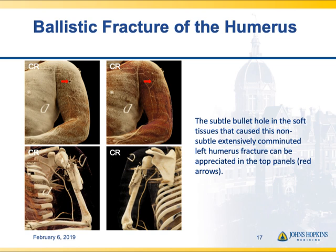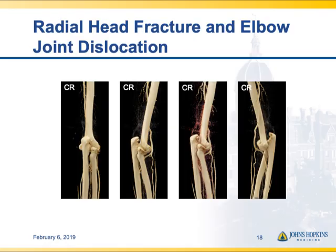This patient doesn't look like much on the top panels — a fairly small soft tissue injury — however this was a bullet wound, resulting in a very comminuted ballistic fracture of the proximal humerus. Most striking is that even with significant metal artifact from bullet fragments, we can still nicely see all the fracture fragments, and the artifact doesn't prevent us from creating useful cinematic rendered images.